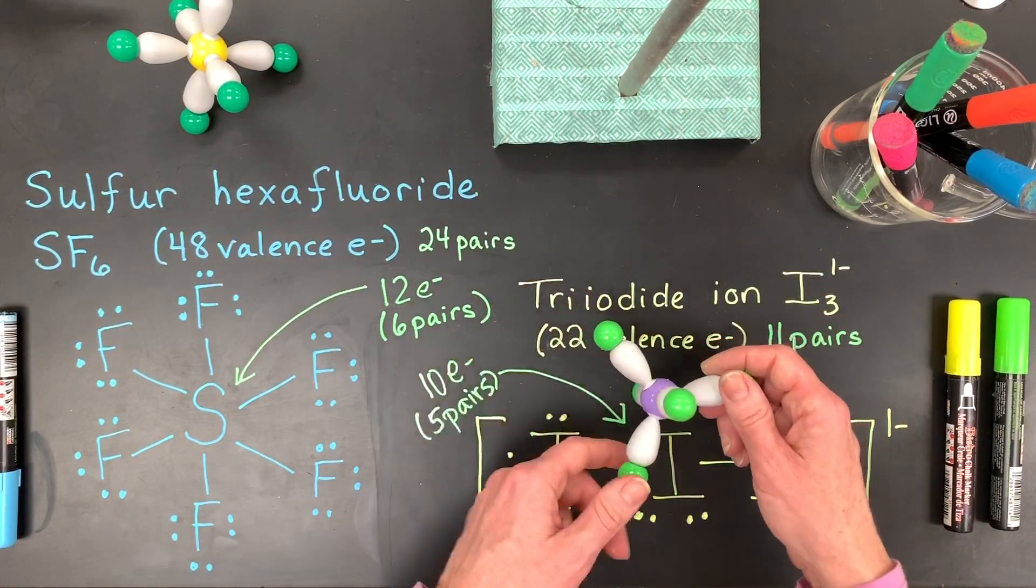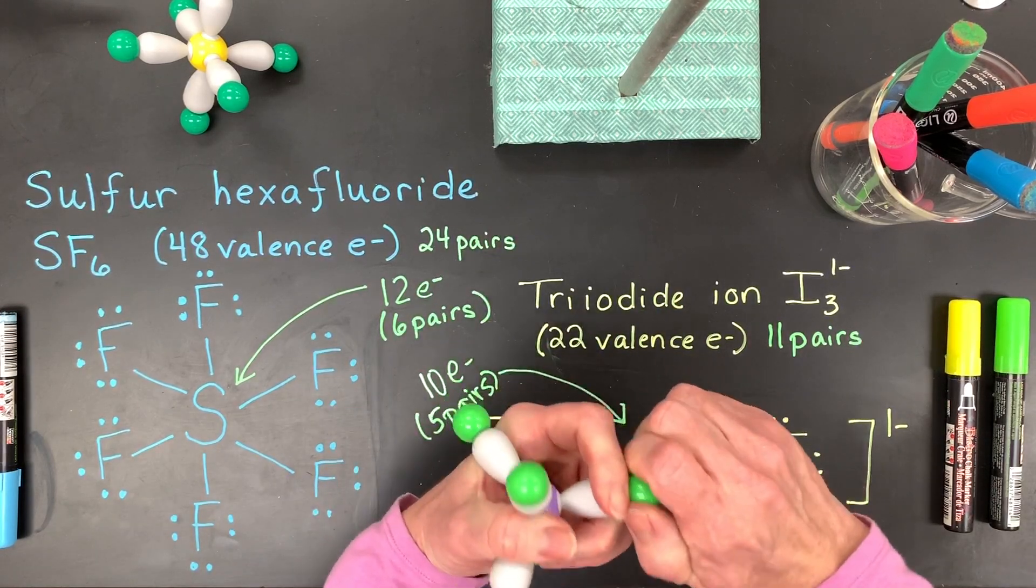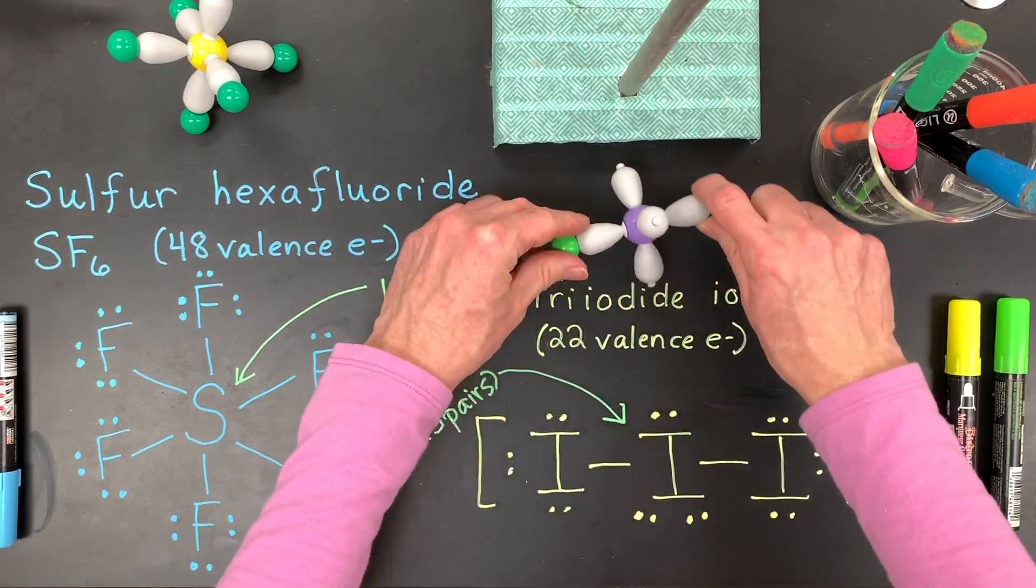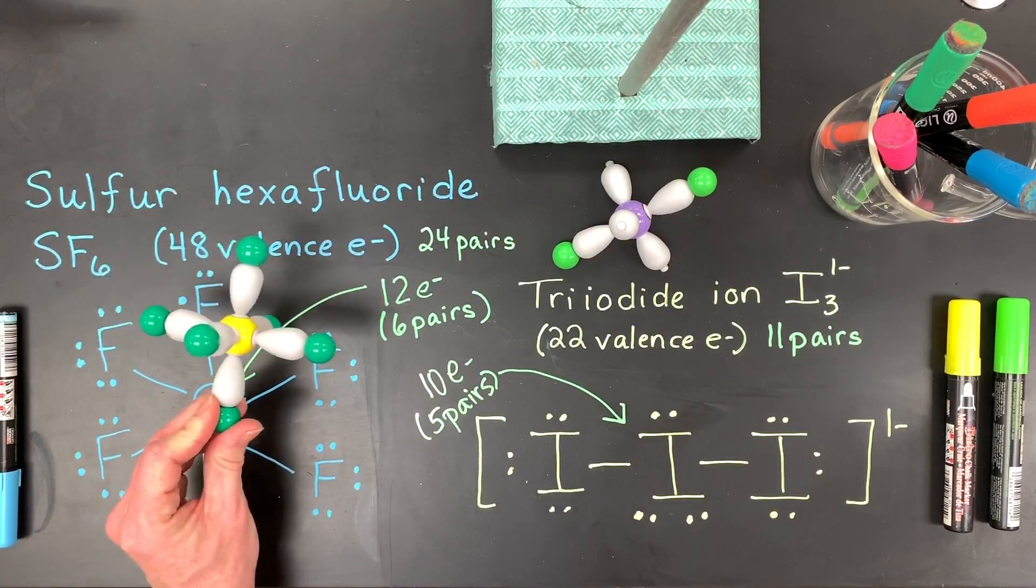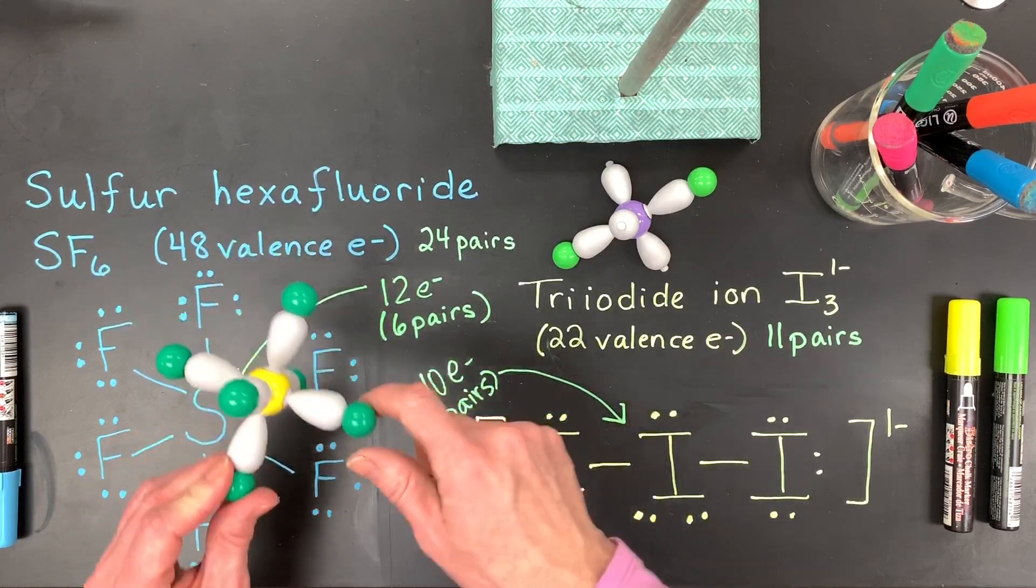The original electron geometry of the triiodide ion is trigonal bipyramidal. However, when you have the electron lone pairs, you end up with a linear molecular geometry because those are not included. The sulfur hexafluoride is an easier one. It's an octahedral electron geometry and an octahedral molecular geometry.